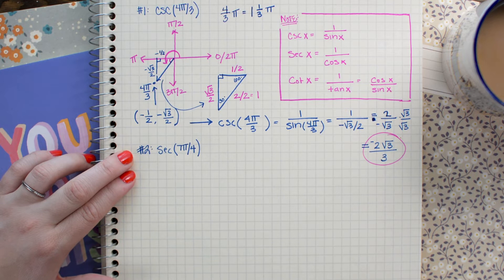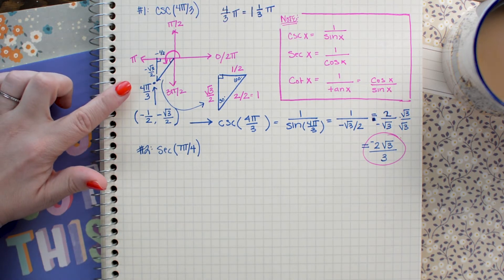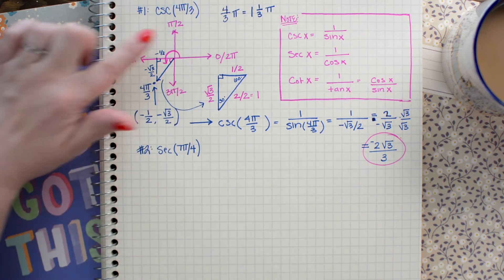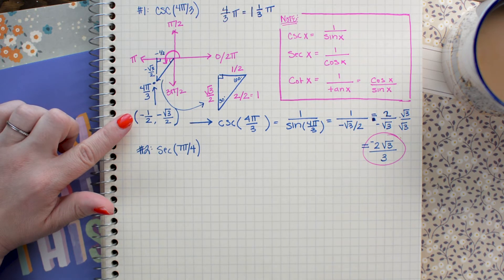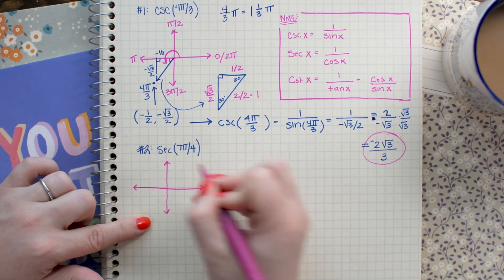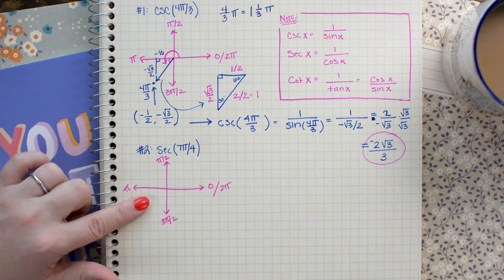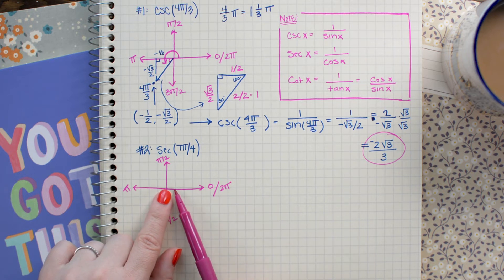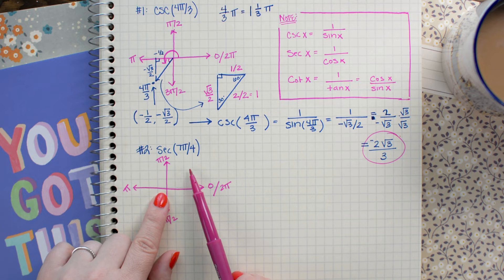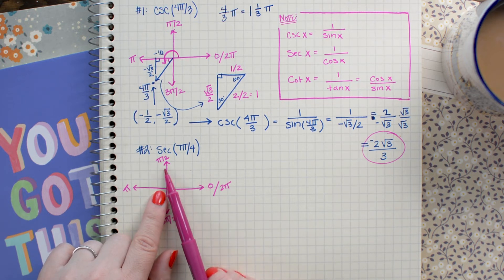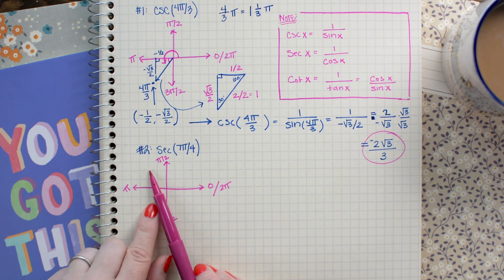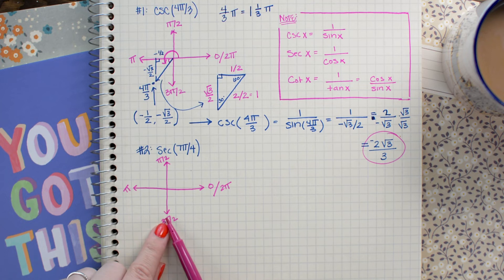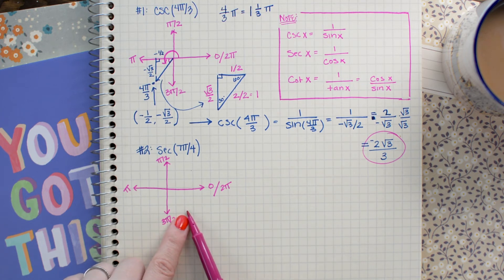Our next problem is to evaluate the secant of 7π over 4. I'm going to locate the rotation of 7π over 4 on my axes and construct the triangle to find the point on the unit circle. When working with π over 4 increments — which are 45-degree increments — counting around: 1π/4, 2π/4, 3π/4, 4π/4, 5π/4, 6π/4, and in quadrant 4, I find 7π over 4.